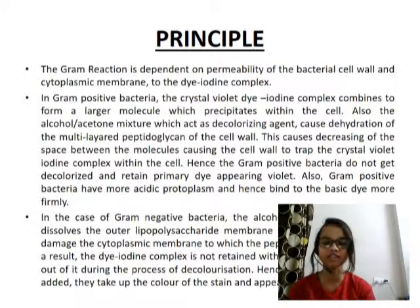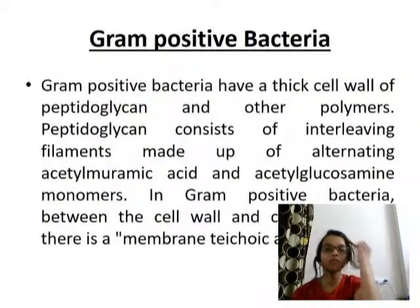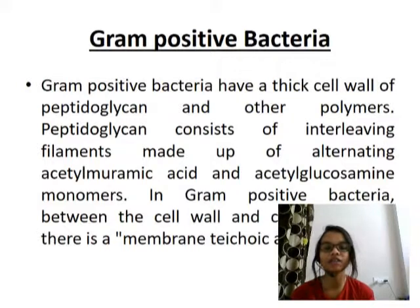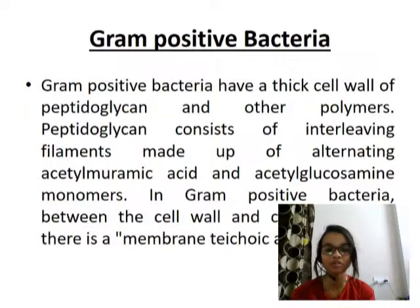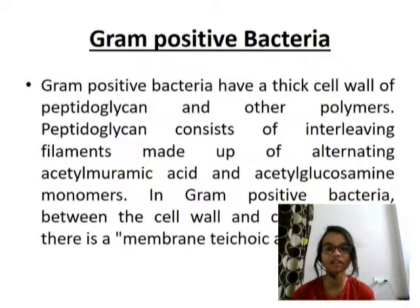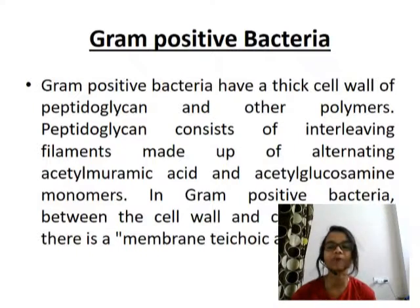Gram positive bacteria have a thick cell wall of peptidoglycan and other polymers. Peptidoglycan consists of interleaving filaments made up of alternating acetyl muramic acid and acetyl glucosamine monomers. In Gram positive bacteria, between the cell wall and cell membrane, there is a membrane known as teichoic acid.